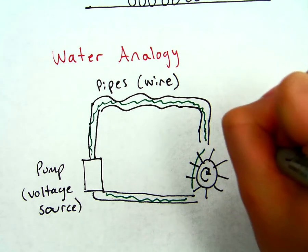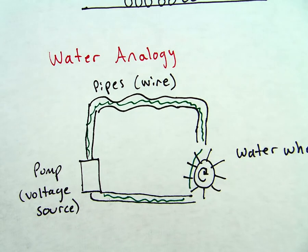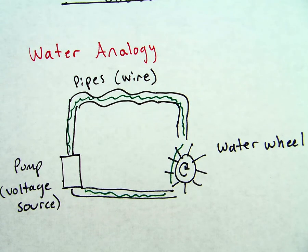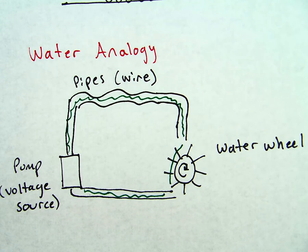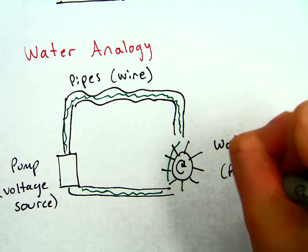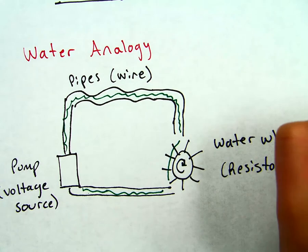Now the water wheel essentially prevents the water from flowing as easily as it could. In this case, this acts like a resistor. So this acts just like a resistor.